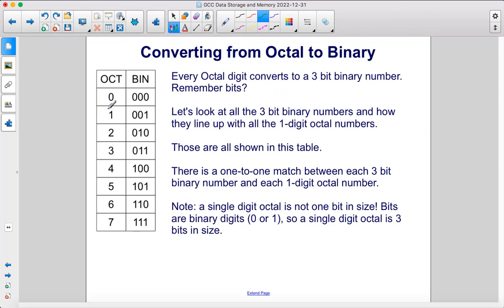Every octal digit converts to a 3-bit binary number. Remember bits? Let's look at all the 3-bit binary numbers and how they line up with all the 1-digit octal numbers. Those are shown in this table. There's a 1-to-1 match between each 3-bit binary number and each 1-digit octal number. Note, a single digit octal is not 1 bit in size. Bits are binary digits, so a single digit octal number is 3 bits in size. So binary 000 would be equivalent to octal 0. Octal 1 is 001 in binary, octal 2 is 010 in binary, and so on.